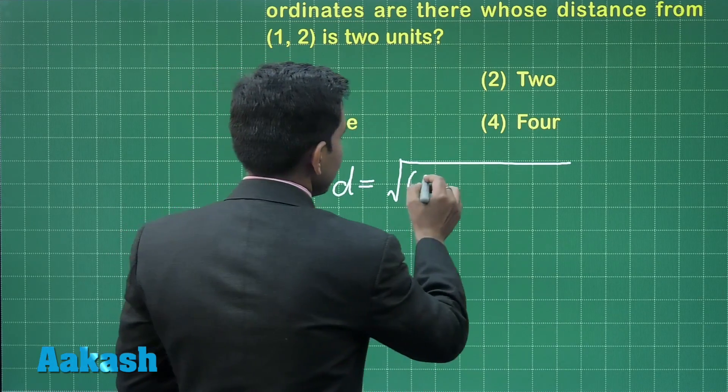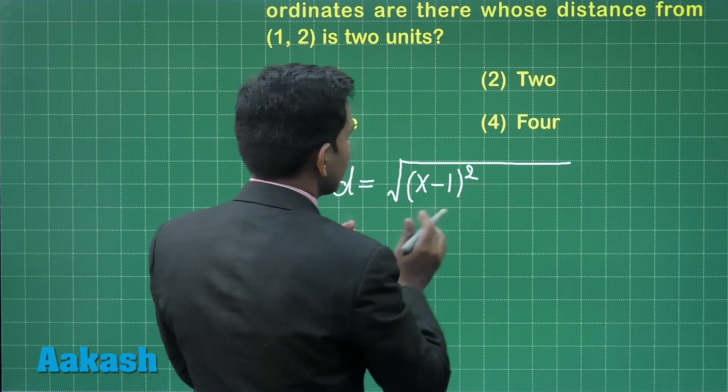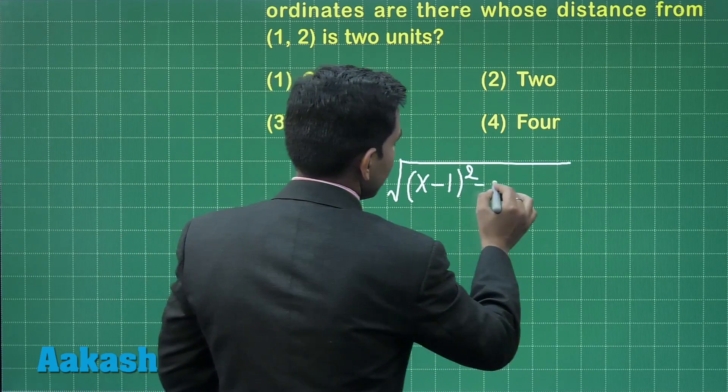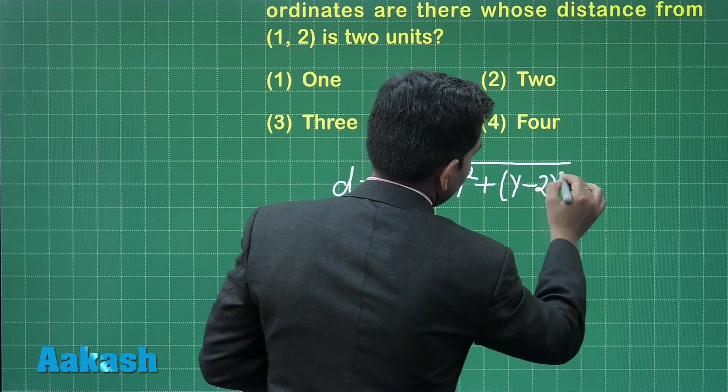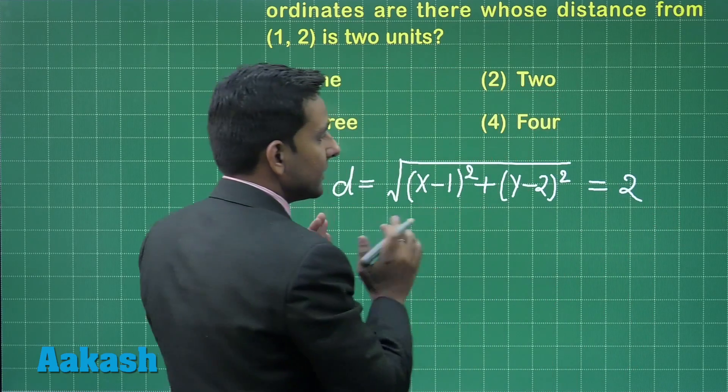Here x1 is x, x2 is 1. We are getting (x minus 1) whole square plus (y minus 2) whole square equals 2, the distance between these two points.